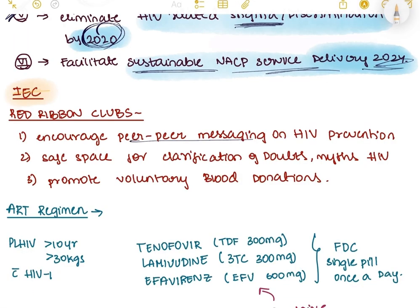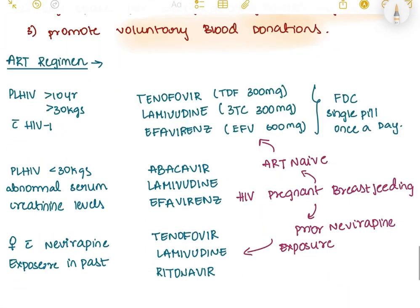Under IEC (Information, Education, and Communication), Red Ribbon Clubs are listed. Groups of people from the same age group spread awareness about HIV, encourage peer-to-peer messaging, clear doubts and myths, and promote voluntary blood donations.